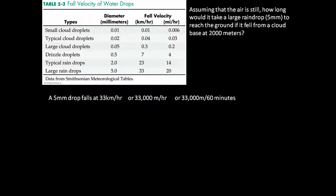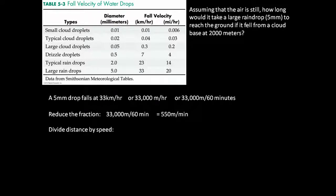We can further express this as 33,000 meters in 60 minutes, since one hour is 60 minutes. We're reducing the fraction to this form with minutes because we're anticipating that the answer — how long it would take that raindrop to fall — is probably going to be in minutes. So we further reduce this from 33,000 meters per 60 minutes to 550 meters per minute, simply dividing 33,000 by 60. Then we divide the distance the raindrop falls, 2,000 meters from the cloud base, by the velocity, 550 meters per minute — that means dividing 2,000 by 550 — and we get 3.6 minutes for a 5 millimeter raindrop to fall to the Earth.